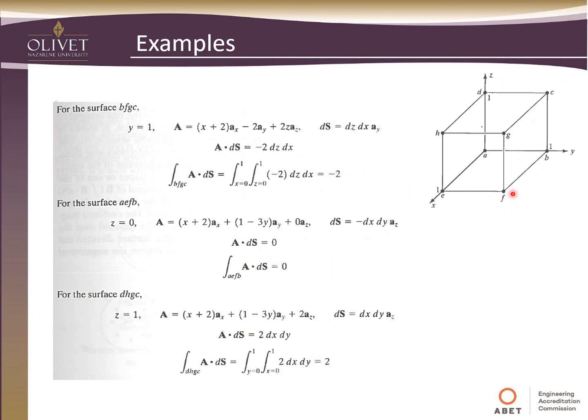Continuing on, if we look at the BFGC. So that's BFGC. So that's this surface here. It's pointing in the positive. It's on the outside of it. So it's pointing in the positive y direction. So we'll have dz dx and then a positive a_y unit vector. Y is equal to 1. The other variables are changing. So we'll put that into our definition of A. And when we do, of course, it changes a little bit. And when we dot this, only our a_y terms will have any contribution. The x and the z don't. So when we dot that, we get negative 2dz dx. Again, integrate in terms of x and z from 0 to 1. And we get negative 2.